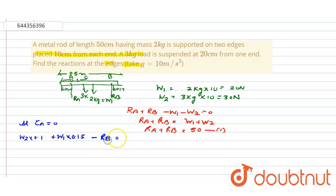minus RB times 0.3 is equal to 0. So we can solve this.